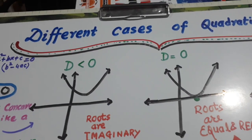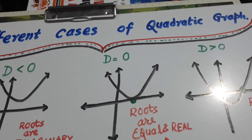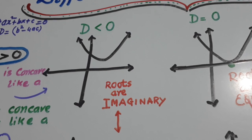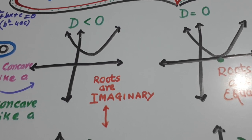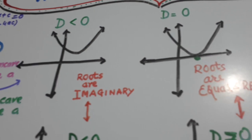Hello friends, I have brought here different cases of quadratic graphs. First case is when D is less than 0, roots are imaginary. The graph is not touching the x-axis.